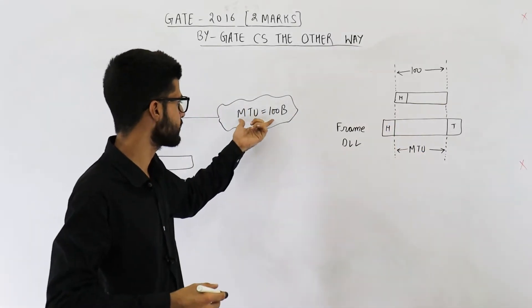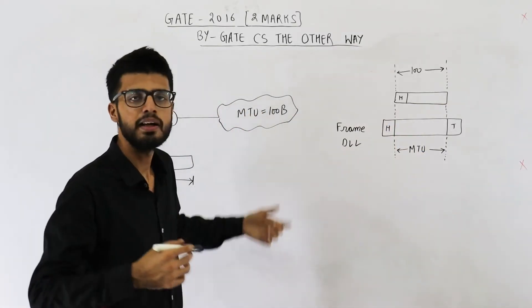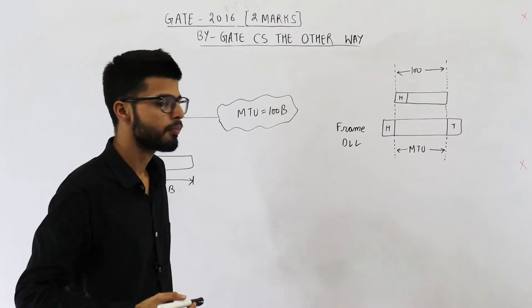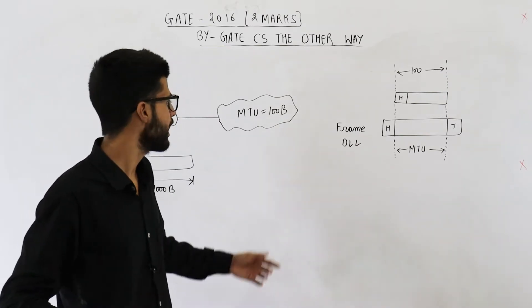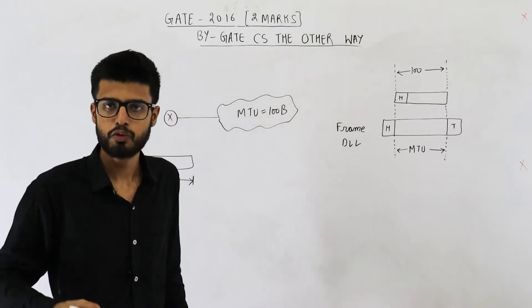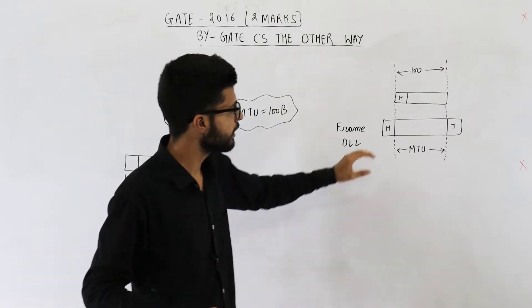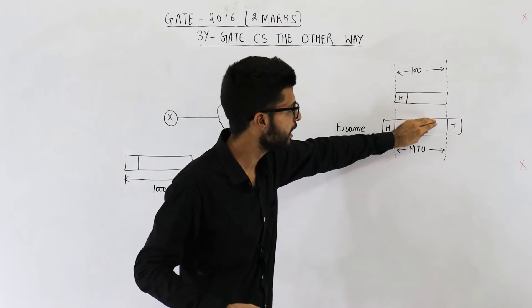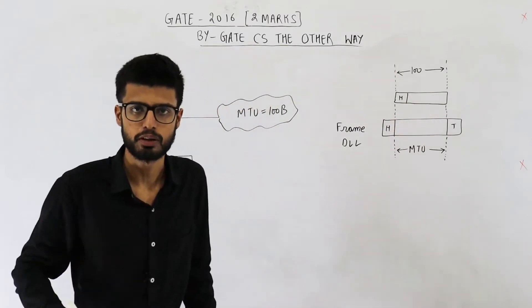So MTU for this network or for this link is 100 bytes. This also means the maximum size of IP packet on this network can be of 100 bytes because eventually an IP packet has to be placed inside a frame only.